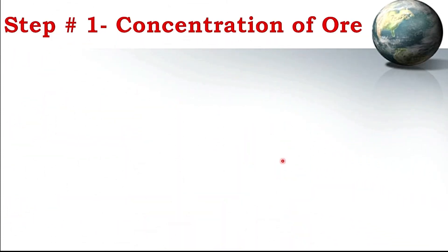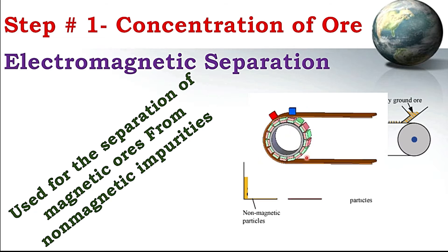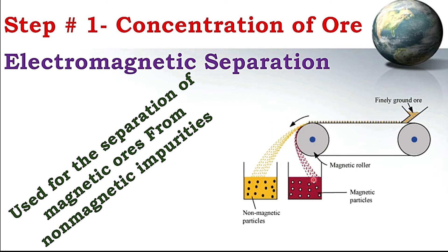Another method for concentrating ore is electromagnetic separation. This method is used for magnetic ores that can be attracted to a magnet, while impurities are non-magnetic. In this process, two wheels are used — one of which is a magnetic wheel. If the ore is magnetic, it is attracted to the magnetic wheel and separated from the impurities, which are non-magnetic and are not attracted. In this way, impurities and ore are separated into two different containers.